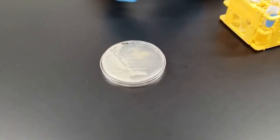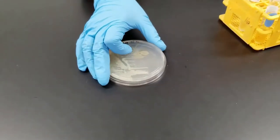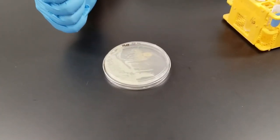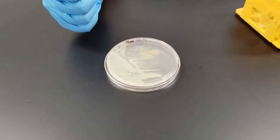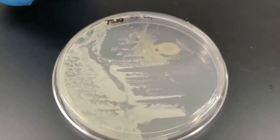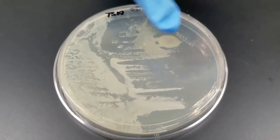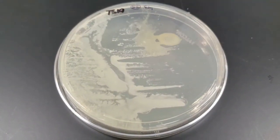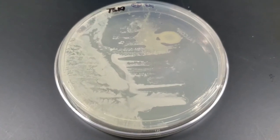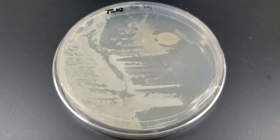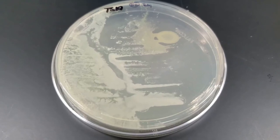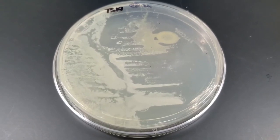So we have a plate here that had been inoculated with Serratia marcescens. This was grown at 37 degrees. So we do have good growth there. Colonies are small, relatively small, tend to be round, smooth edges on them.